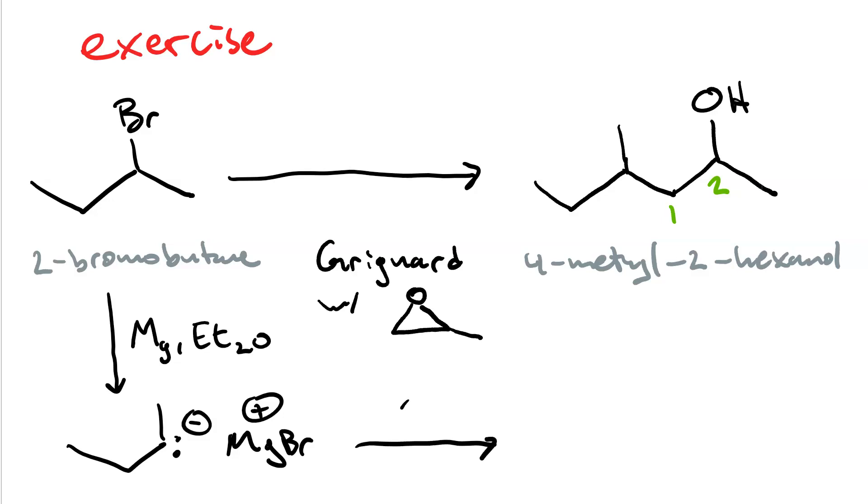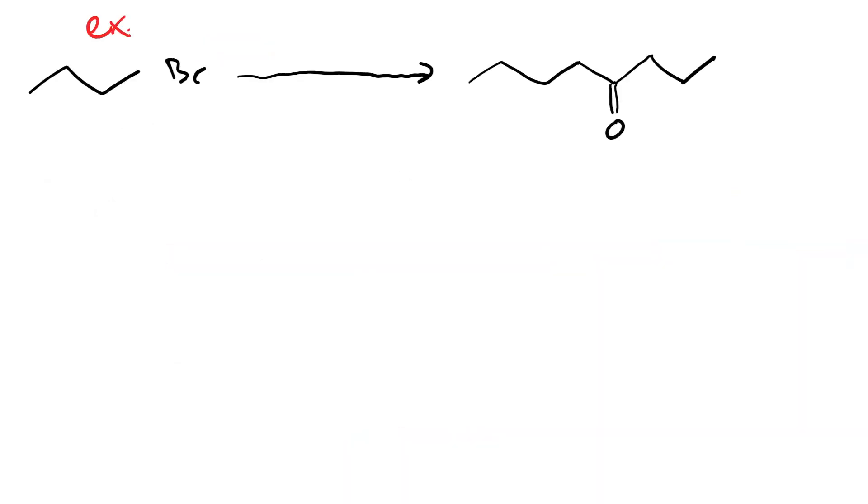We then react it with our 2-methyloxorane. We get nucleophilic attack on the less-substituted ring carbon, opening the ring to give us an alkoxide. And, this sigma bond came from this pair of electrons. Our final step, we need to protonate.